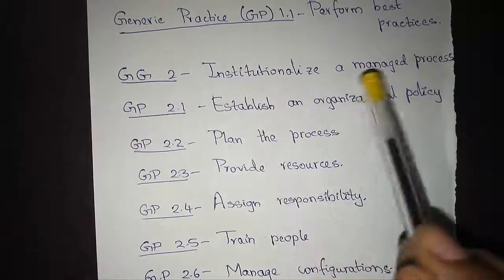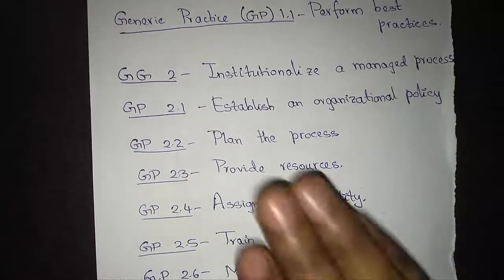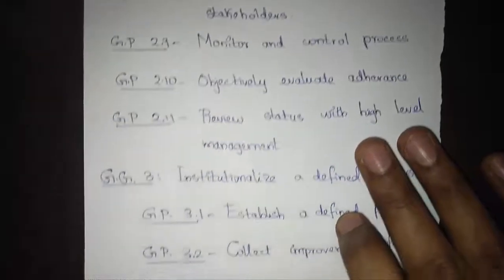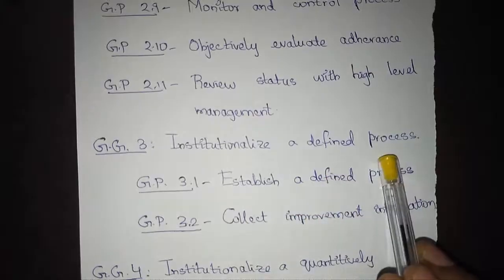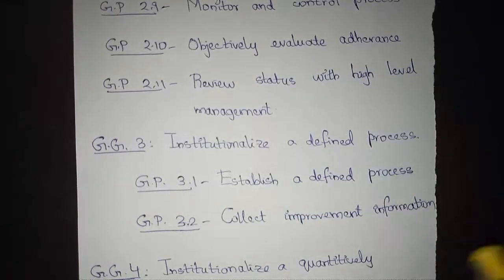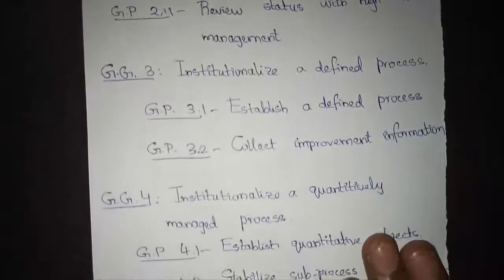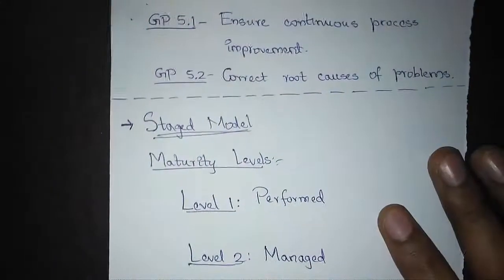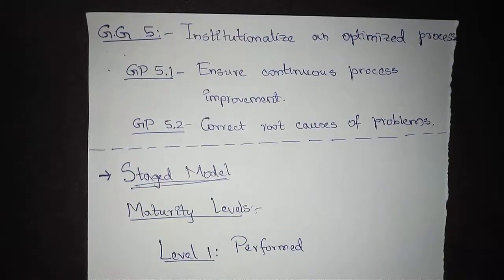Generic Goal 2 is institutionalizing the managed process, with generic practices to attain it. We also have a generic goal to institutionalize a defined process, corresponding to Level 2 and Level 3 of the continuous capability model. Generic Goal 4 is to institutionalize a quantitatively managed process, and the final generic goal is to institutionalize an optimized process.